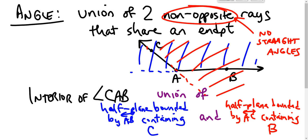So the interior, I'm sorry, it's not a union, I'm so sorry, it's not a union, it's the intersection. It's the intersection of those two half planes because the interior of angle CAB is the stuff that gets colored both ways.